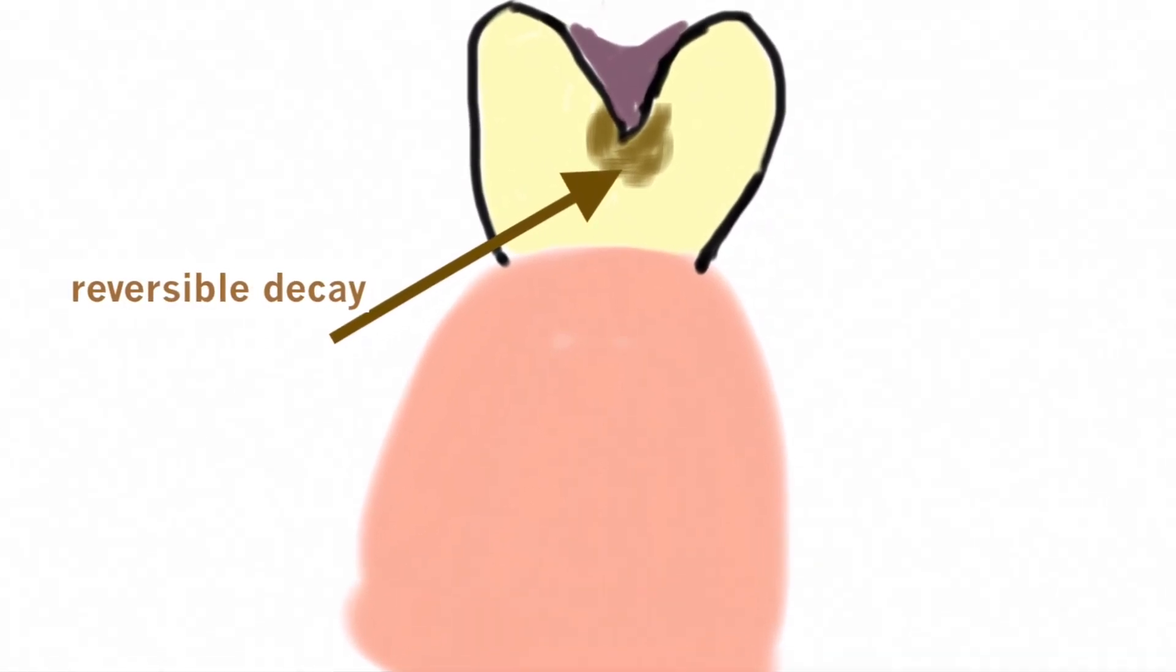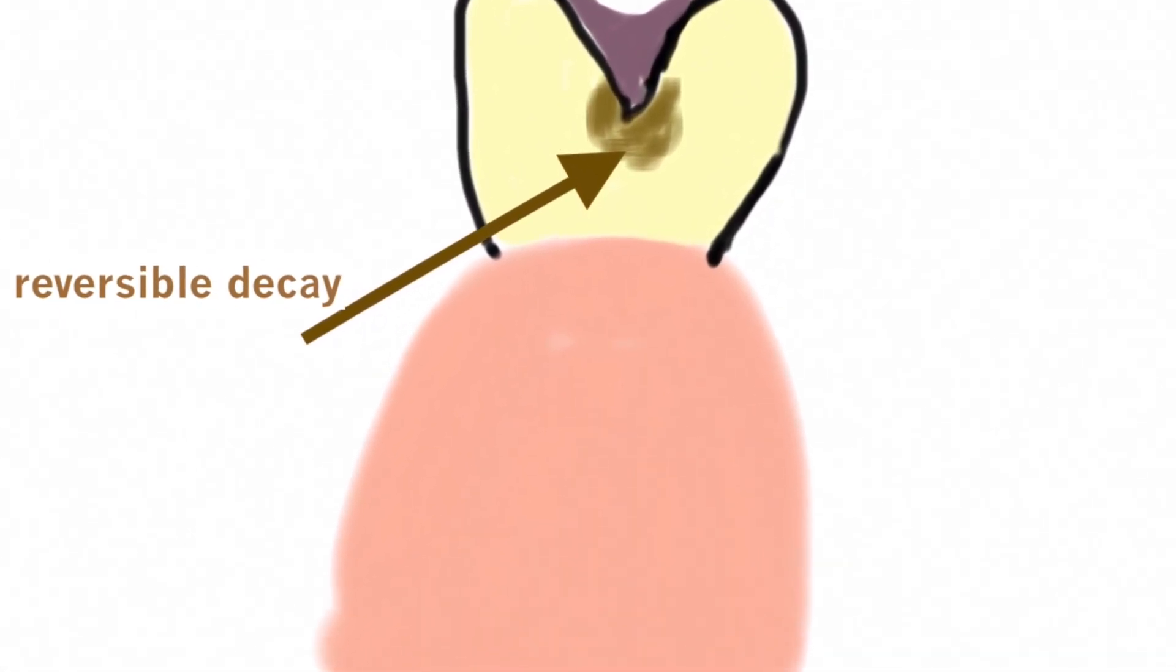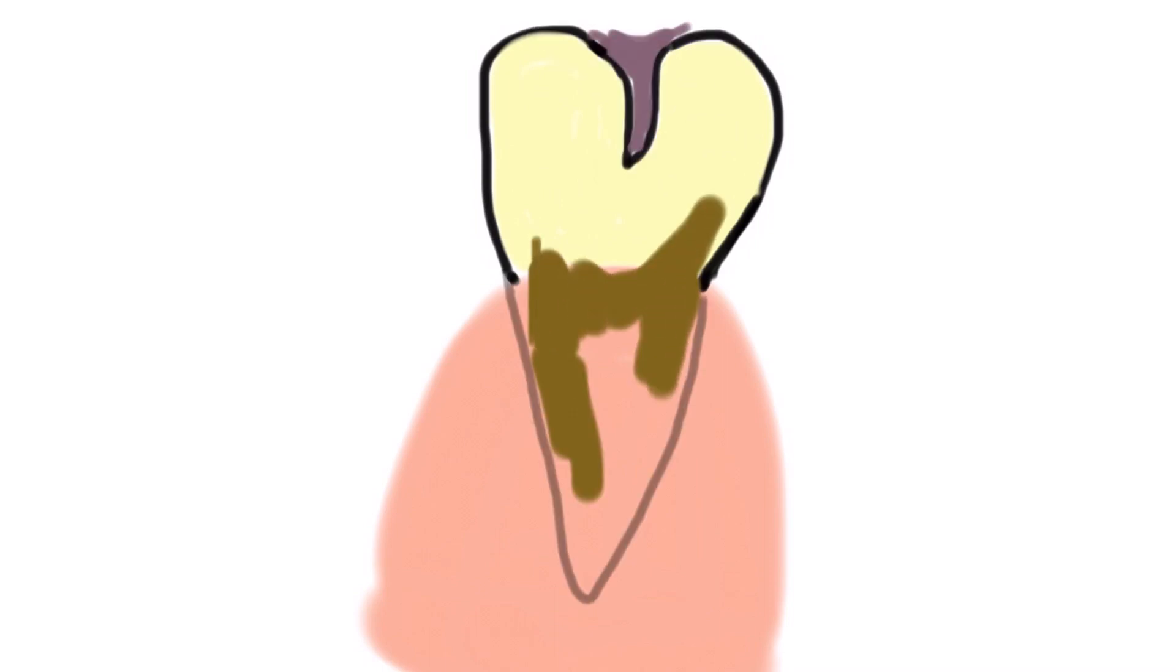But if the fissure is deep and you don't get it clean, then often it starts to decay. So sometimes we just adjust it slightly to make it easier to keep clean and the sealant will work better anyway.